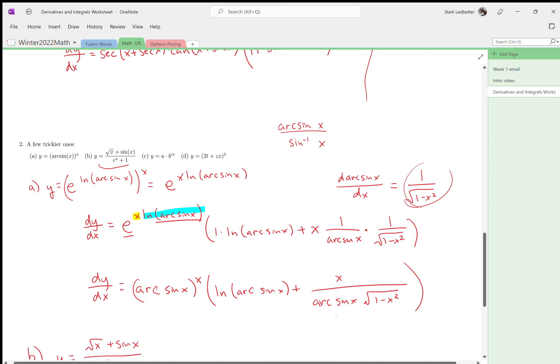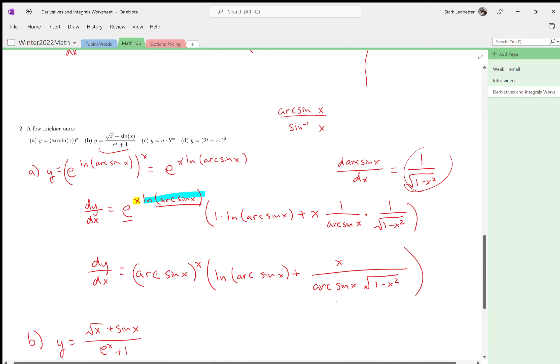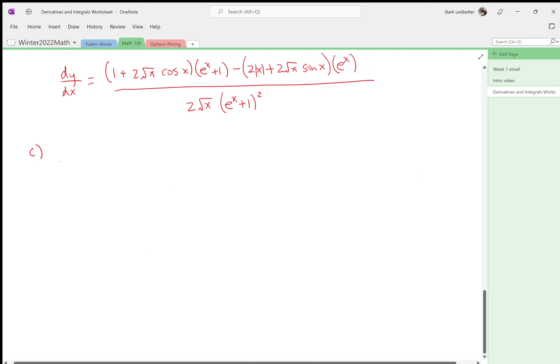But maybe don't worry too much about that today, or do, maybe always worry about it. Maybe always worry about radicals; that's not a terrible idea. Okay, part c: y equals a times b to the cx. That's not too bad. I'm going to do my e to the log trick again, so this is a times e to the log b, all to the power of cx, which is e to the c log b times x.